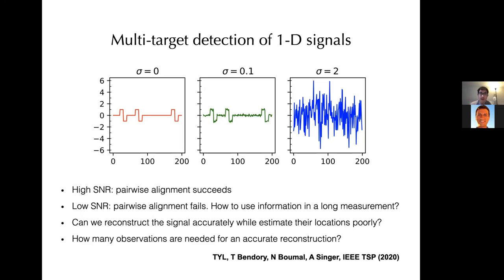Our goal is to reconstruct the underlying short signal from this long measurement without knowing their individual locations. When the signal-to-noise ratio is high, we can easily identify the individual locations and do pairwise alignment. The interesting problem comes when the signal-to-noise ratio is low — say one-fourth — where we cannot even identify the individual short signals. So pairwise alignment is not feasible, and we have to find a way to use information from the overall long measurement.